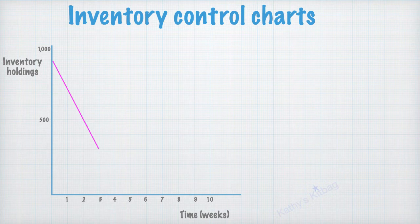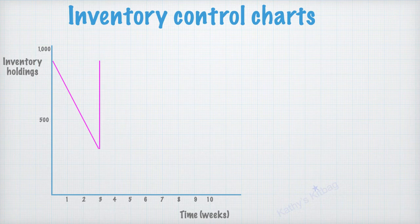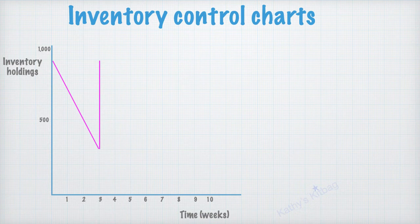So the next line that we draw on a chart is stock coming into the business. So here you can see now this is a vertical line. So at week three the business here has received enough stock to take it back up to 900 units.